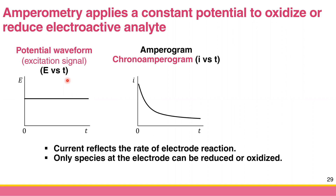After we apply the constant potential, if it is positive enough to drive oxidation or negative enough to drive reduction, we get the Faradaic current. We can plot the current detected from the working electrode versus time. In general, the amperometric current falls over time. This diagram of current versus time is called an amperogram, or chronoamperogram — 'chrono' meaning time.